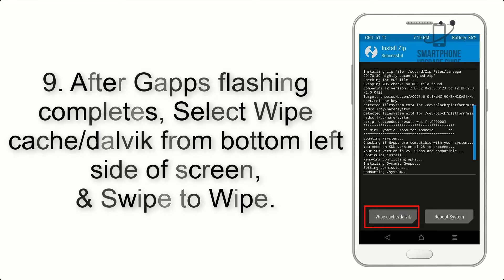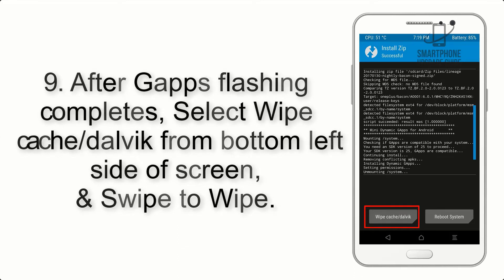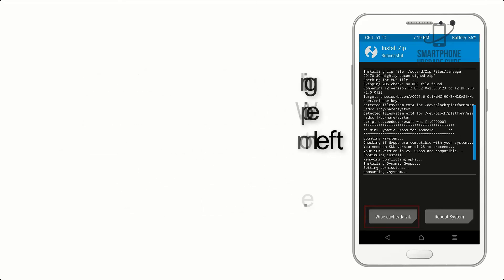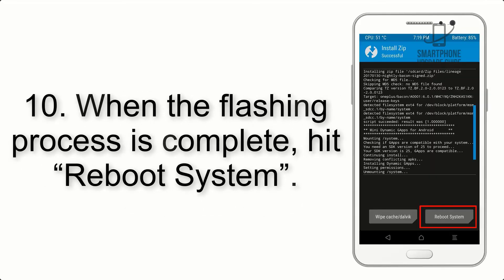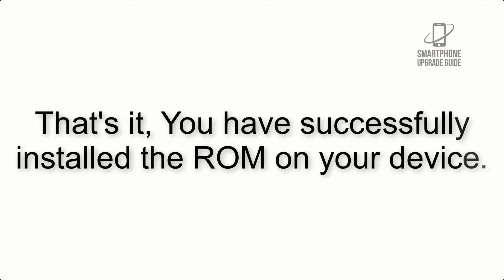Step 8: Flash the GApps zip package in the same manner. Step 9: After GApps flashing completes, select Wipe Cache and Dalvik from the bottom left side of the screen and swipe to wipe. Step 10: When the flashing process is complete, hit Reboot System. That's it — you have successfully installed the ROM on your device.